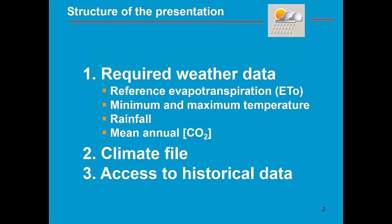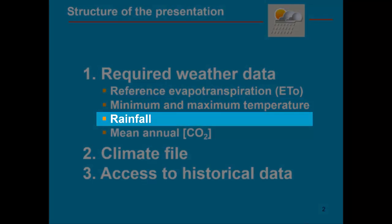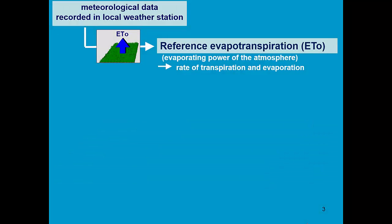Required weather data consists of reference evapotranspiration, minimum and maximum temperature, rainfall, and mean annual CO2. From meteorological data recorded in a local weather station, reference evapotranspiration can be computed. It expresses the evaporating power of the atmosphere and determines the rate of transpiration and evaporation.